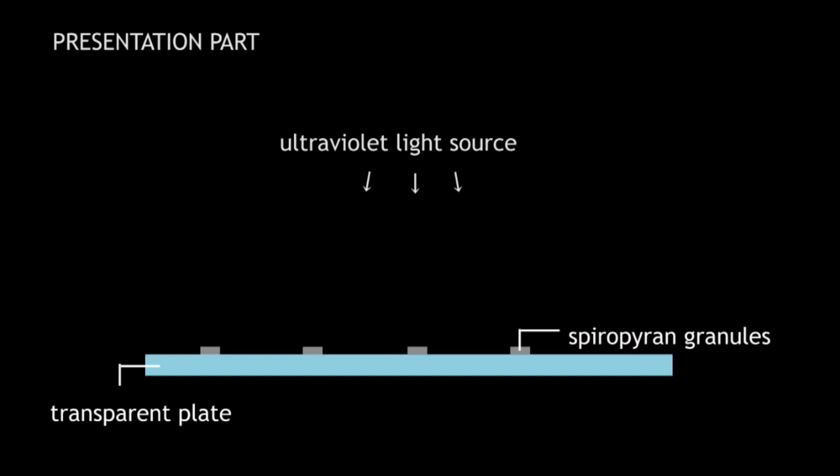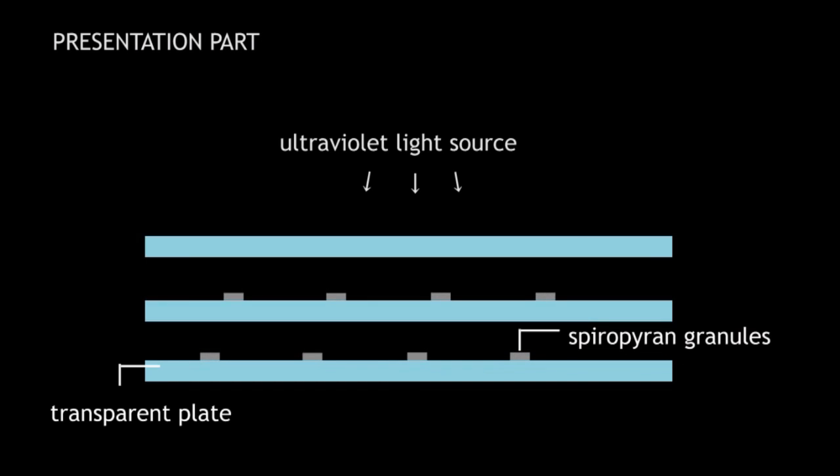The photochromic material granules are arranged in a way not to be overlapped when they are seen from the ultraviolet light source.